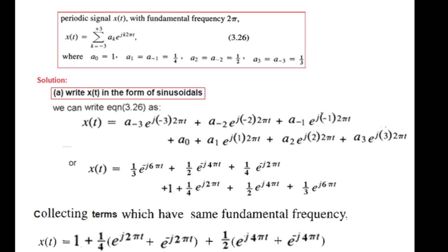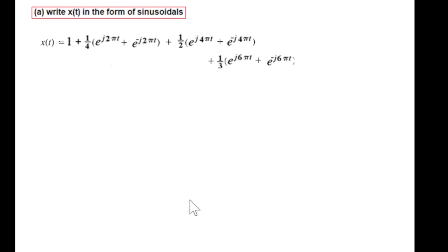Collecting we get this form. Now we'll use Euler's formula to convert them into cosine. This is the Euler formula: e^(jθ) plus e^(-jθ) divided by 2 is cos θ. So dividing by 2 we can write in the form of a cosine signal, similarly in all three cases.